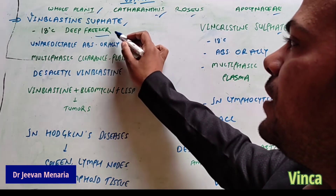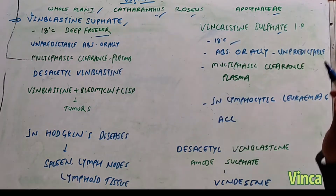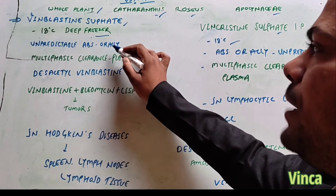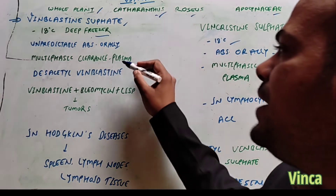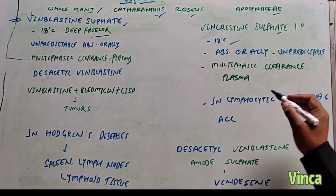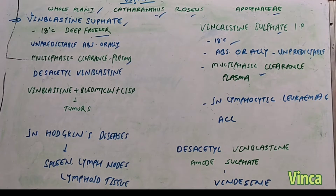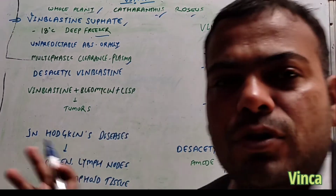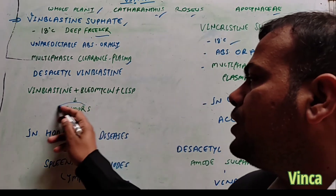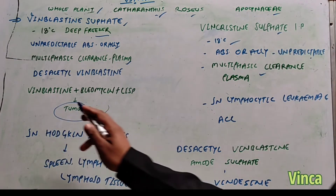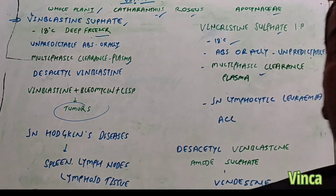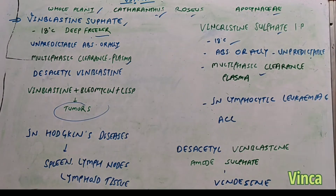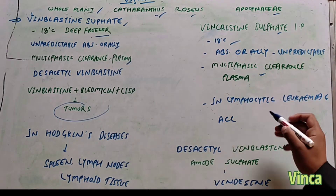Vinblastine is preserved at minus 18 degrees. It has unpredictable oral absorption and multi-phasic plasma clearance. It is used in chemotherapy regimens for treating tumours — specifically vinblastine, bleomycin, and cisplatin-based platinum therapy.